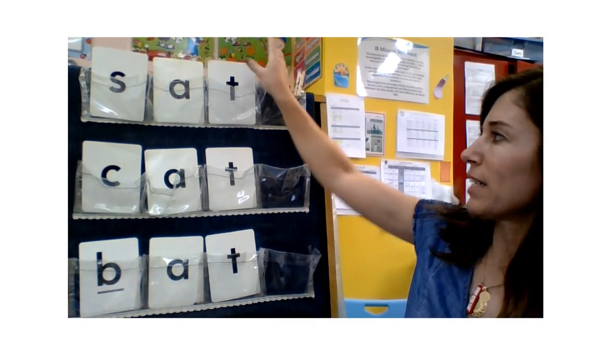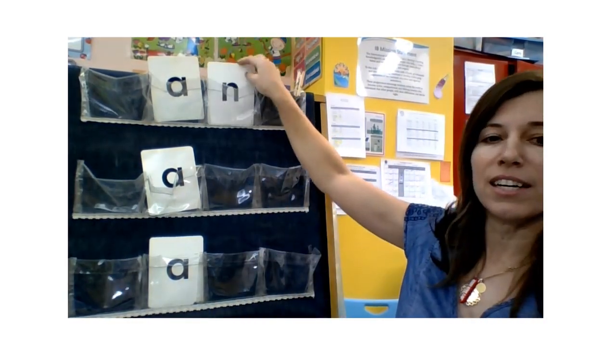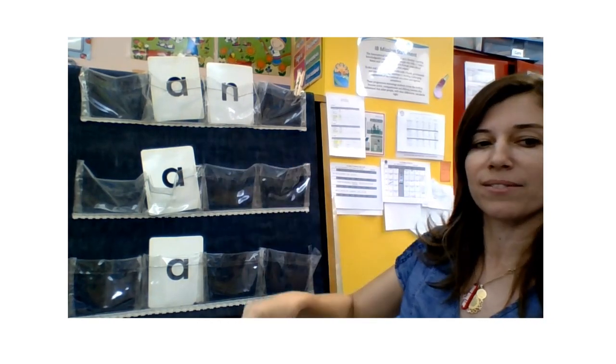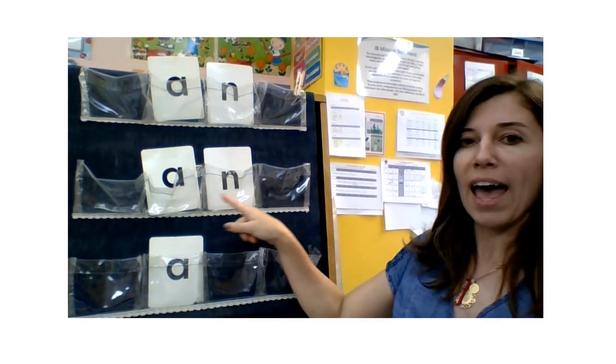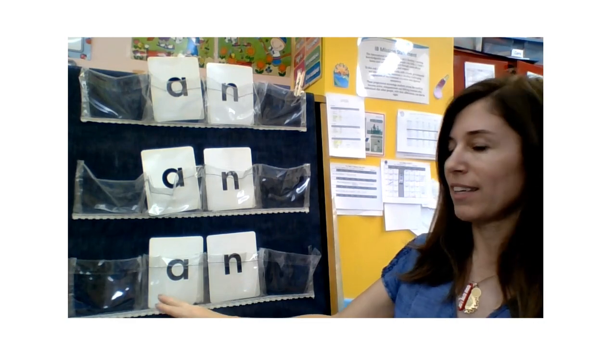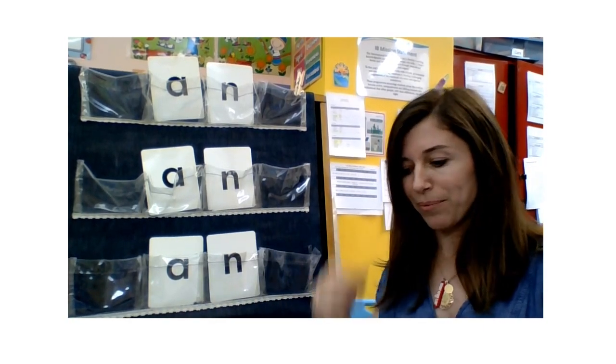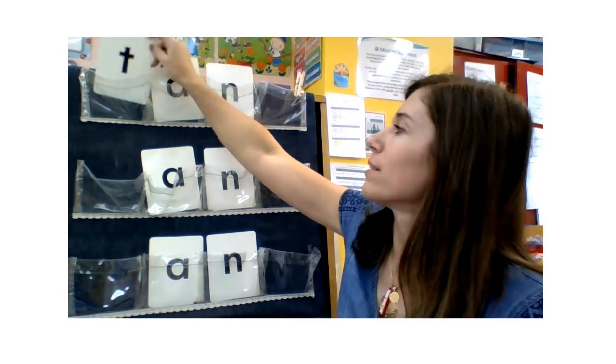This is the at-word family. Now let's take a look at another word family. Let's remove these and keep the short A, and add N — an. Now this is the an-word family. If we add T: T, A, N — tan.